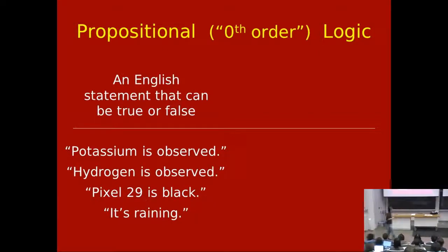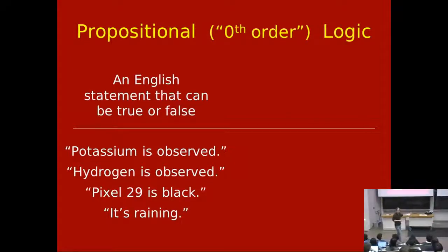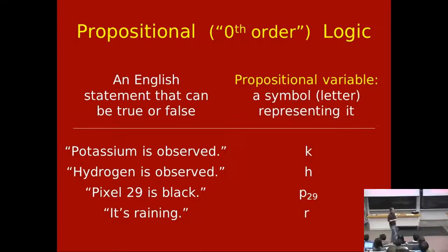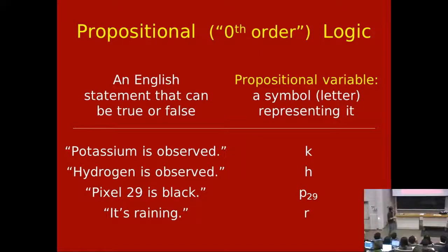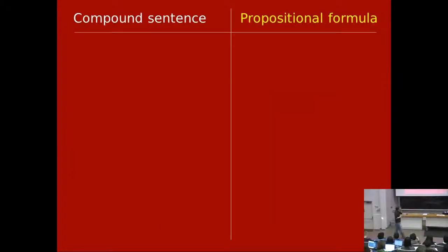The basic components of propositional logic are statements. When we model the real world with math, we start with real stuff expressed in natural language like English — basic statements like 'potassium is observed' or 'it's raining.' In propositional logic we formalize this by giving a propositional variable to stand for each sentence. A variable is denoted by a lowercase letter, possibly with a subscript. So we might call the potassium statement K, the hydrogen statement H, and the rain statement R.